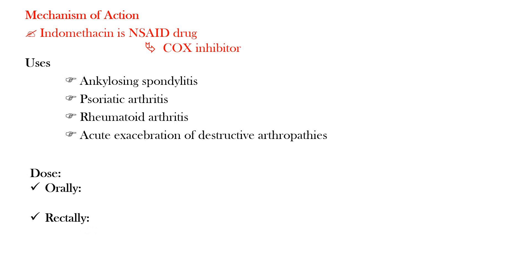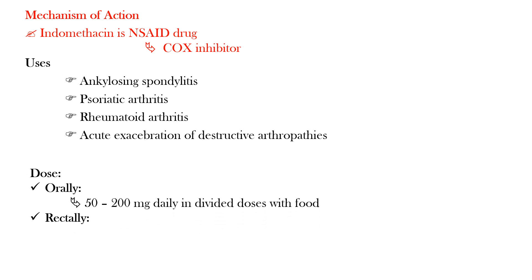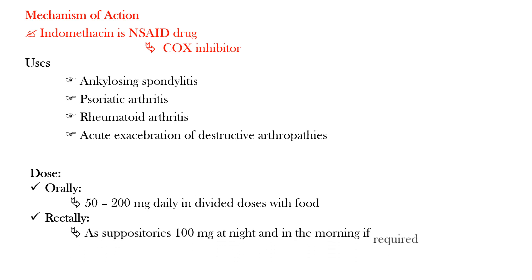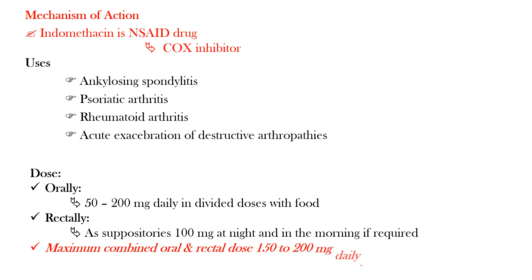The oral dose of Indomethacin is 50 to 200 mg daily in divided doses with food. Rectally, Indomethacin is used as suppositories — 100 mg at night and in the morning if required. The maximum combined oral and rectal dose of Indomethacin is 150 to 200 mg daily.